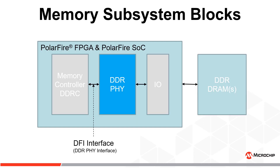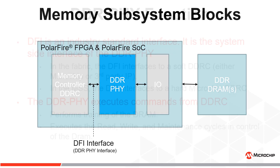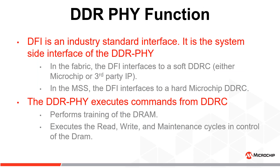The DDR PHY sits between the memory controller and the external DRAM. The PHY faces the memory controller with the industry standard DFI interface. The line side faces I/O banks, which are selected to meet performance of up to 800 MHz DDR or 1600 MHz transfers per second. The memory controller issues commands to the DRAM through the DFI, and the DDR PHY executes these commands with the DRAM. For PolarFire FPGA, the PHY interfaces to a soft memory controller IP, which can be from Microchip or a third party. For PolarFire SOC, the PHY resides in the microprocessor subsystem and interfaces to a hard memory controller.